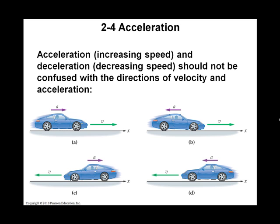Acceleration is a vector, but unlike velocity — if you have a positive velocity that means you're going forward, and a negative velocity means you're going backwards. Using compass directions: on the x-axis, a positive velocity is east and a negative velocity is west. On the y-axis, a positive velocity is north and a negative velocity is south.